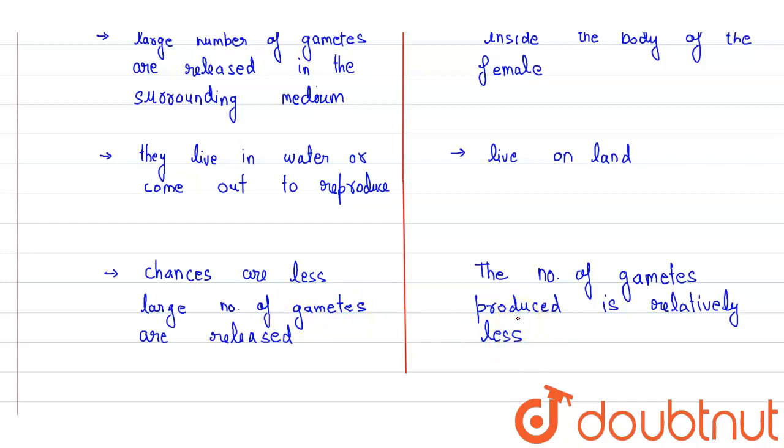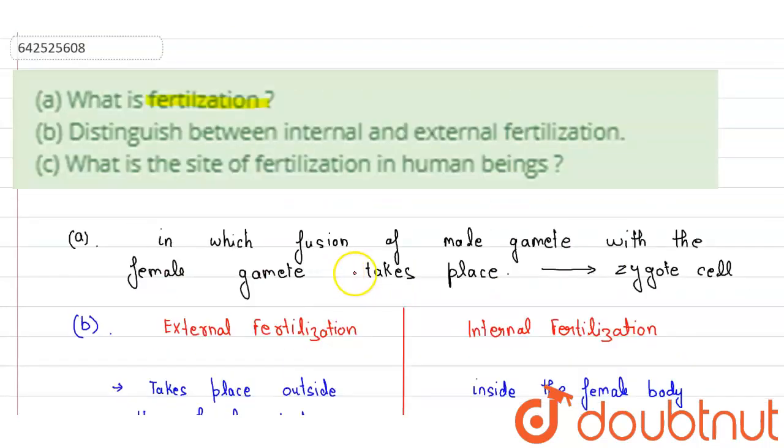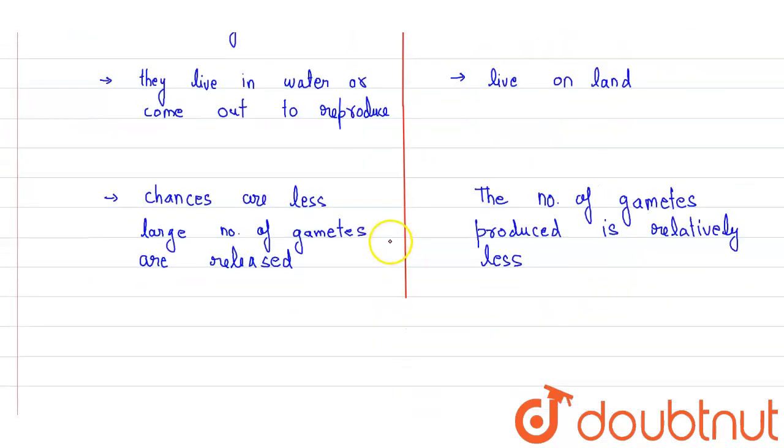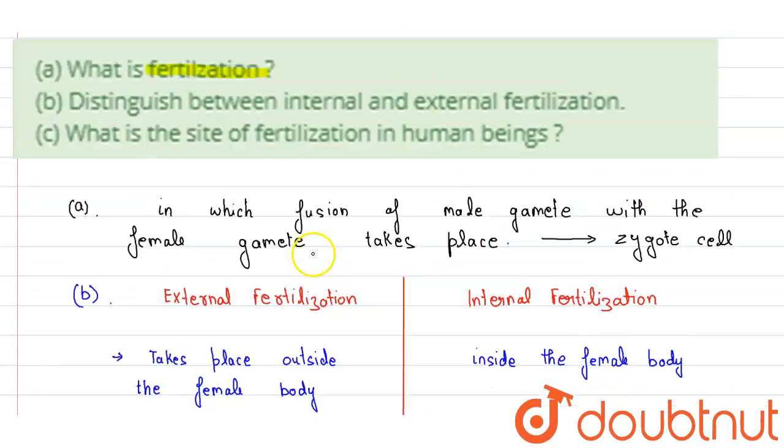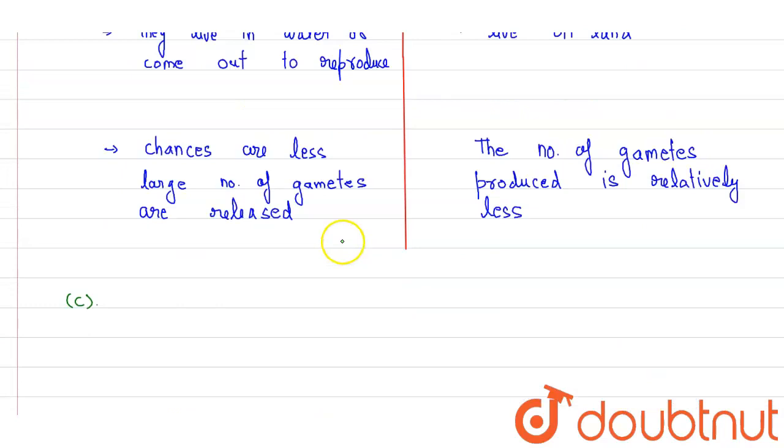Now let us answer the C part of the question: what is the site of fertilization in human beings? For answering this question, let me write it down. For C part, the site wherein this fertilization takes place in human beings is called fallopian tube.